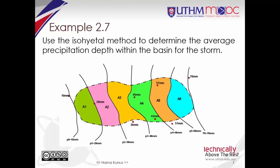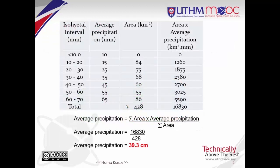Draw the isohyets of various values by considering the point rainfall data as guidelines and interpolating between them. Determine the area between each pair of isohyet lines. All this information is put in a table showing the isohyet interval, the average precipitation, and the area. Then multiply the area between each contour by the average precipitation in that area to get the rainfall volume. Sum these volumes to get the total rainfall volume, then divide by the area of the watershed to get the average aerial precipitation. For this example, the average precipitation is equal to 39.3 cm.